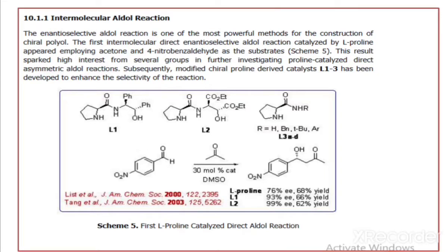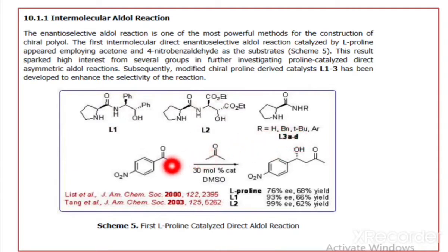The first intermolecular direct enantioselective aldol reaction catalyzed by L-proline employed acetone and 4-nitrobenzaldehyde as substrates, shown in scheme number 5. Different chiral proline catalysts, L-1, L-2, and L-3, are involved and were developed to enhance the selectivity of the reaction. When these chiral proline catalysts are used, they enhance the rate of the reaction.